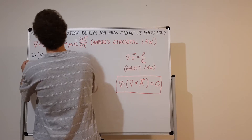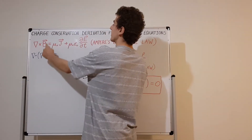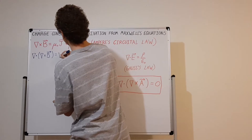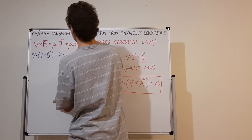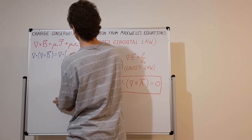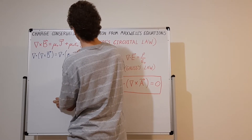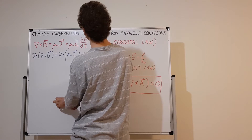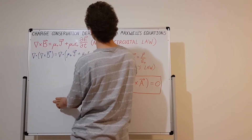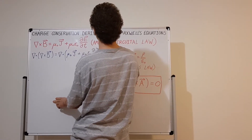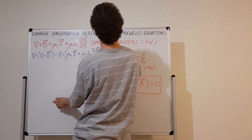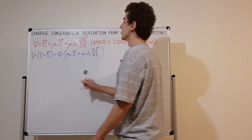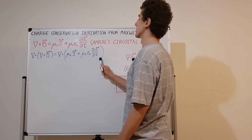On the right-hand side, we take the divergence of the full expression: mu-nought times J (the current density), plus mu-nought epsilon-nought times the partial derivative of the electric field with respect to time. So we're taking the divergence of both sides equally.